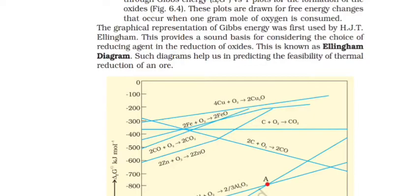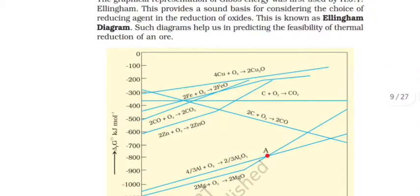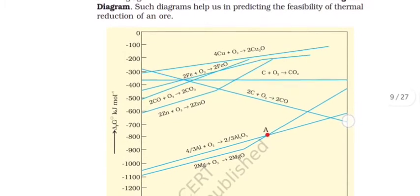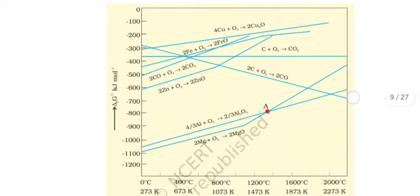These plots are drawn for free energy changes that occur when one gram mole of oxygen is consumed. The graphical representation of Gibbs energy was first used by H.J.T. Ellingham. This provides a sound basis for considering the choice of reducing agent in the reduction of oxides. This is known as Ellingham diagram. Such diagrams help us in predicting the feasibility of the reduction of an ore.